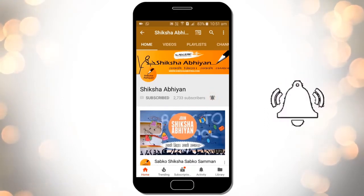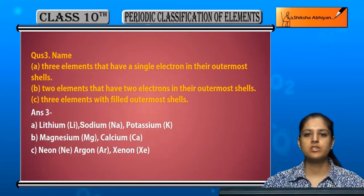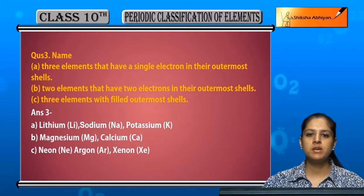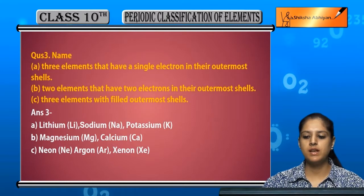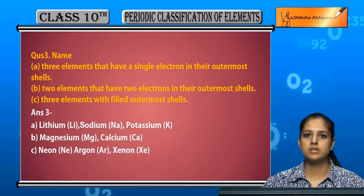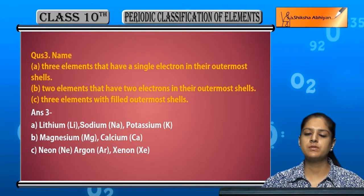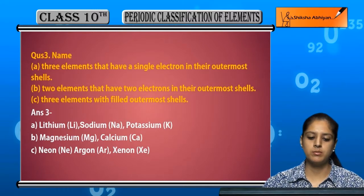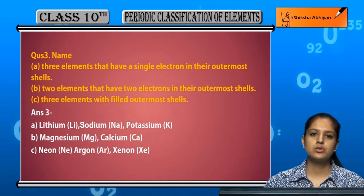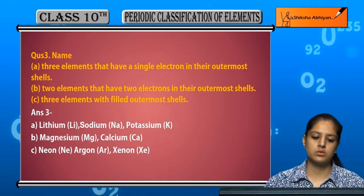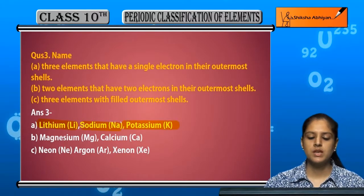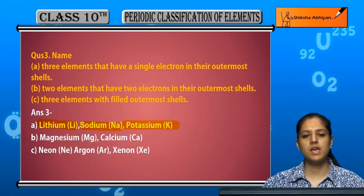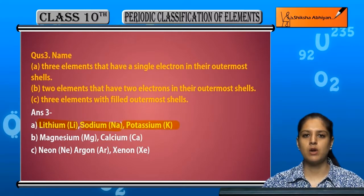Question number three: we have to name some elements. First, we have to name three elements that have a single electron in their outermost shell — valence shell में सिर्फ एक electron जिनका है। So the first group elements: lithium, sodium, potassium — इनके valence shells में एक ही electron है।